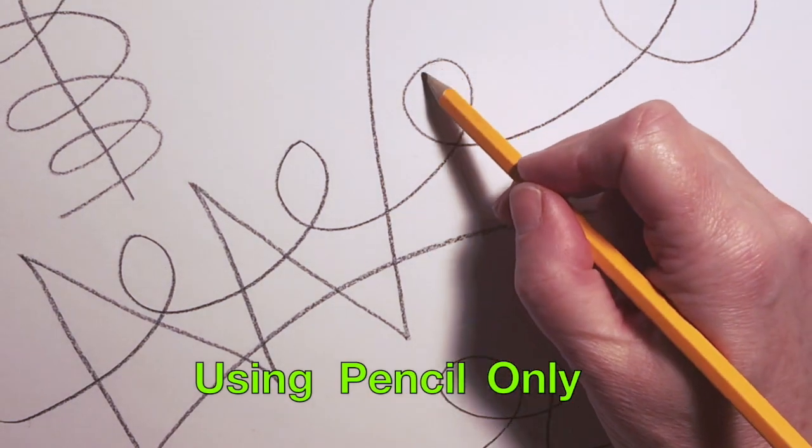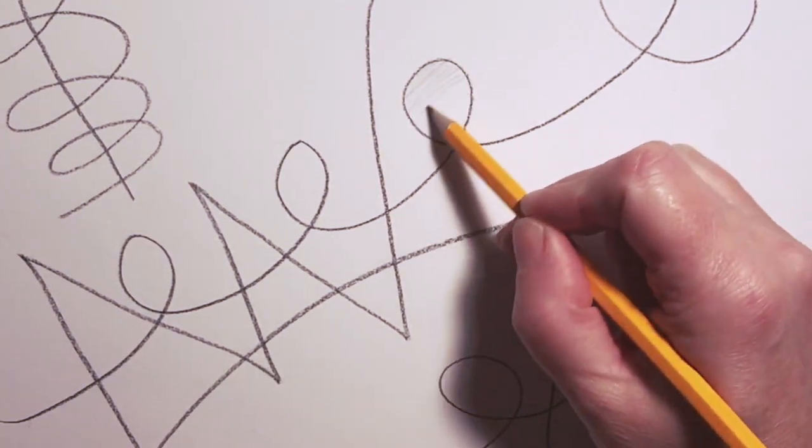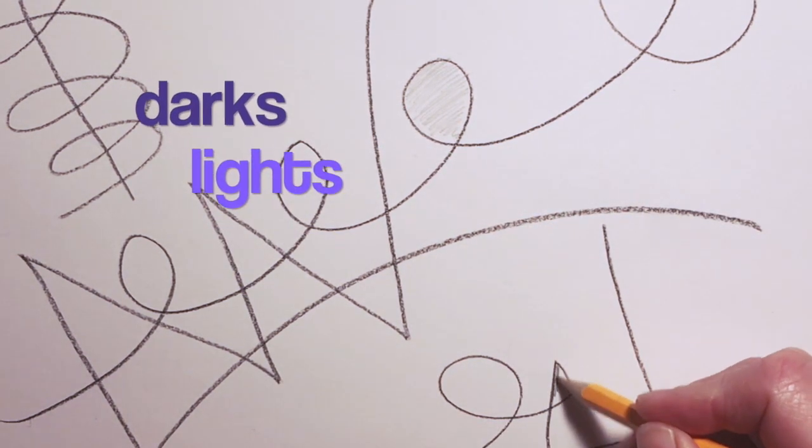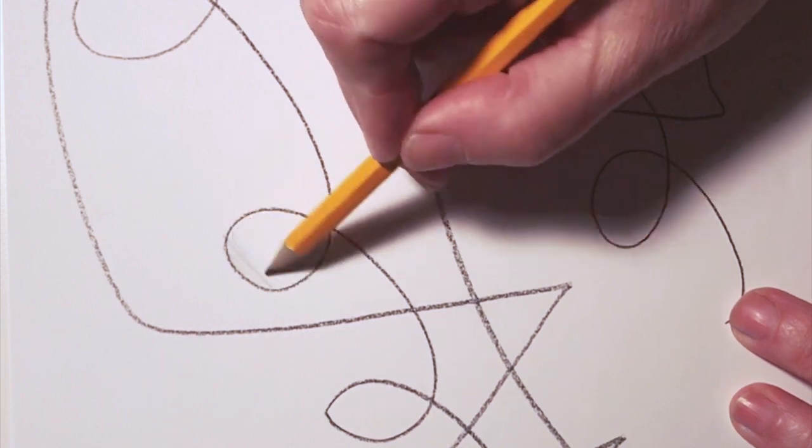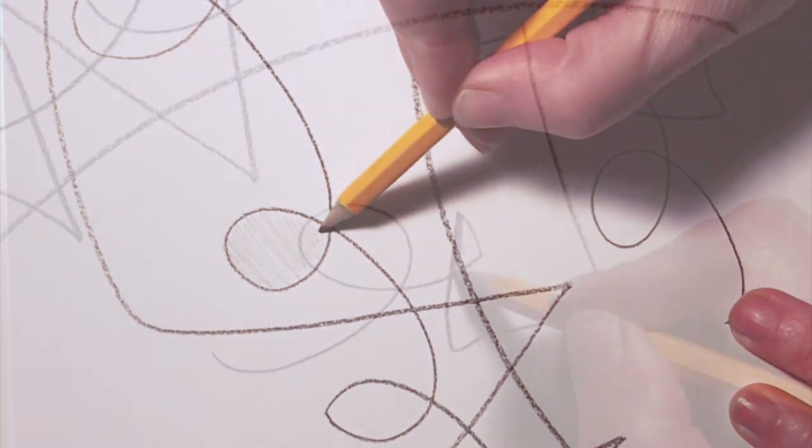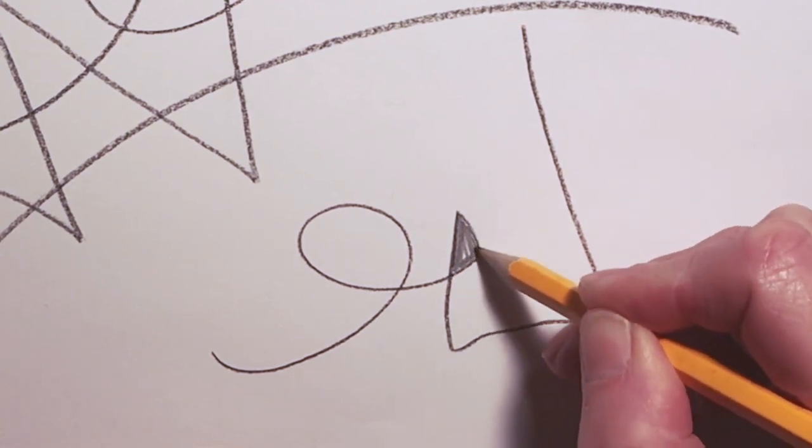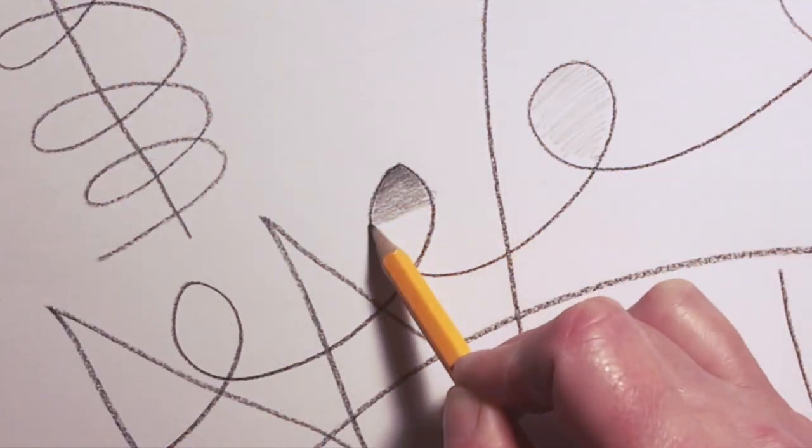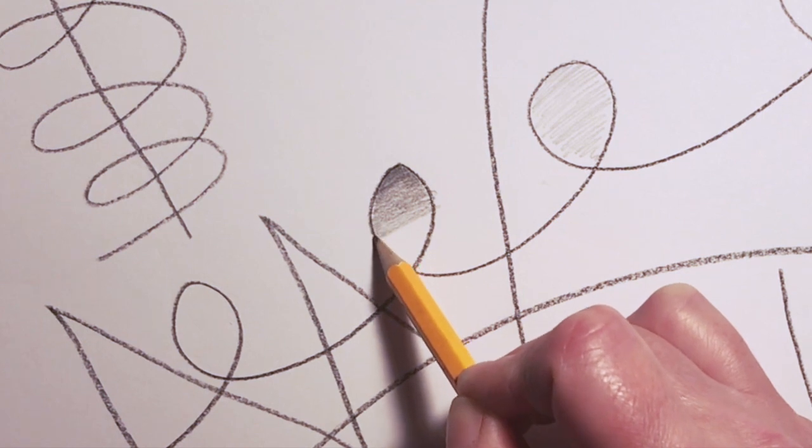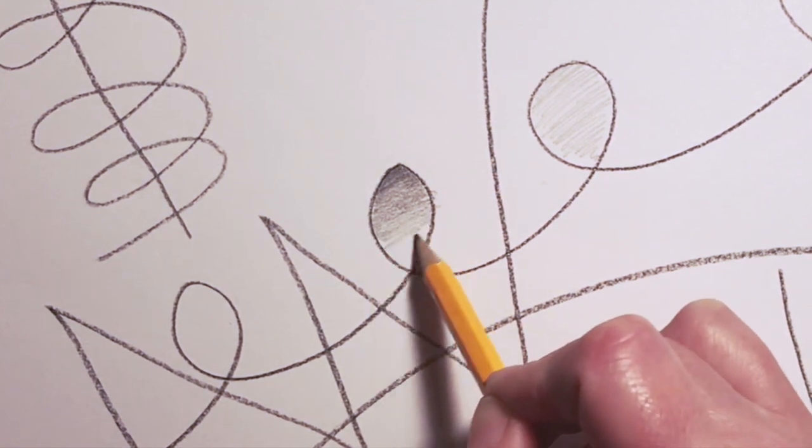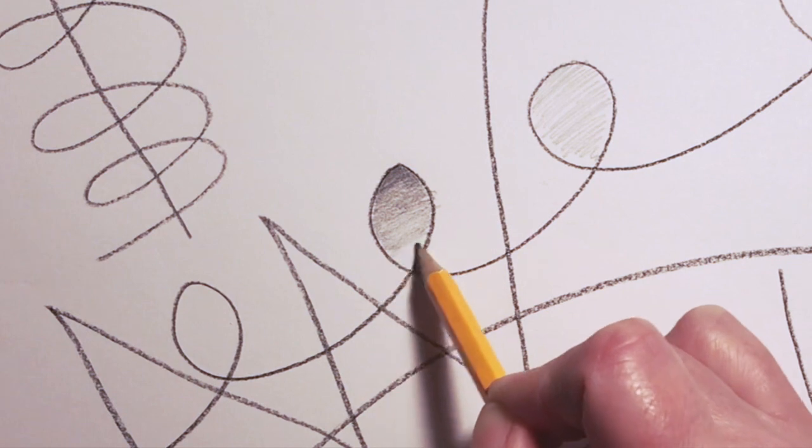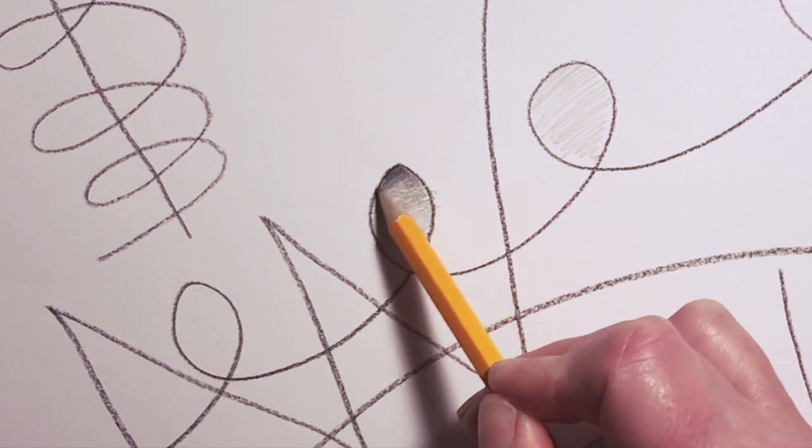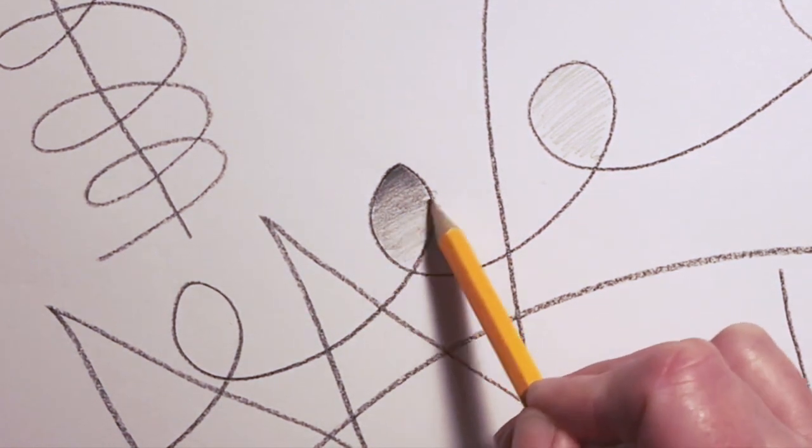If you are using pencil only, you can create variety by using different values. And what I mean by value is darks and lights. I can color this shape in light. I can color in this shape dark. I can color this shape in medium. I can color this shape as a gradient where it goes from dark on one end to light on the other. You might notice that as I'm shading, I have my pencil angled so that I'm actually shading with the side of my pencil.